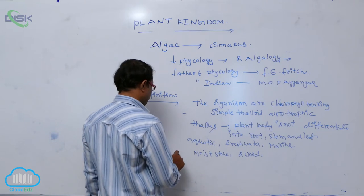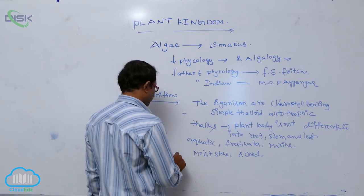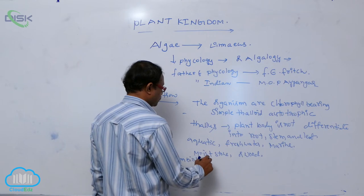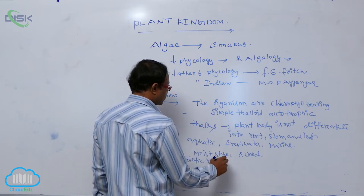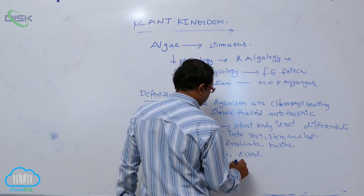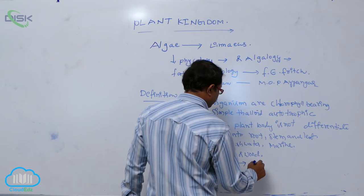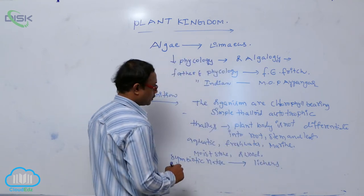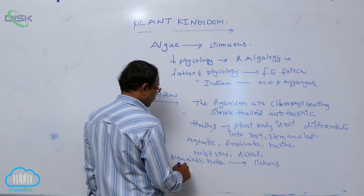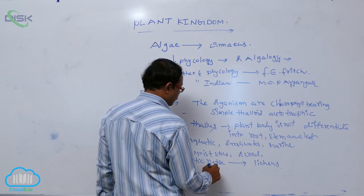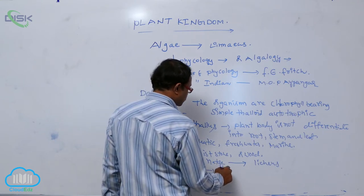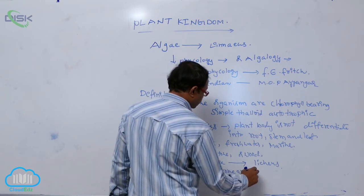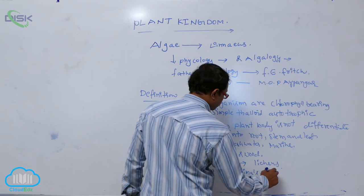But some are showing symbiotic nature. They form a special type of plants known as lichens. Some algae also show symbiotic association with some animals, known as a sloth bear.